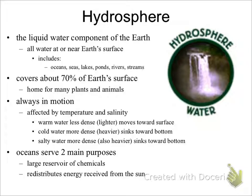The hydrosphere is the collective mass of water found on, under, and over Earth's surface. It is the liquid water component of the Earth. It includes oceans, seas, lakes, ponds, rivers, and streams. The hydrosphere covers about 70% of Earth's surface and is home for many plants and animals. It is always in motion, and is affected by temperature and salinity, or salt content.